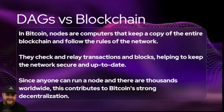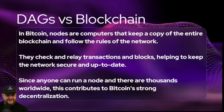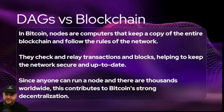Since anyone can run a node, there are thousands worldwide that contribute strongly to Bitcoin's decentralization. I'm actually running a node on an Orange Pi, which is a variation of a Raspberry Pi. You can set it up as a wallet, use it for inscriptions — and that's what makes Bitcoin a strong decentralized network.